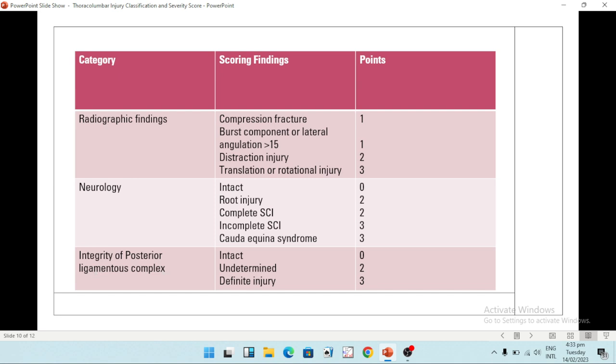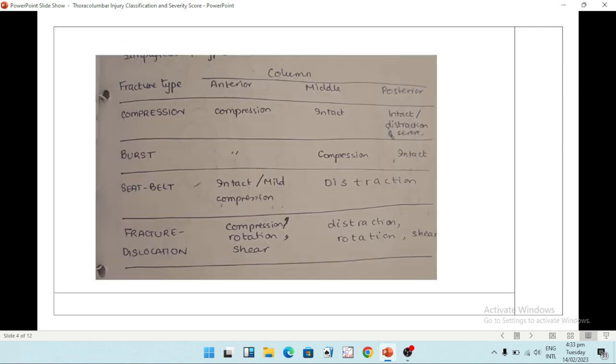Coming to the radiographic findings, there are different types of fractures or injuries. If you look at the AO classification, the American Orthopedic classification, there are so many types of fractures that you would be confused. So what they have done is they have taken the main headings and given them points. I will discuss these fractures with you.